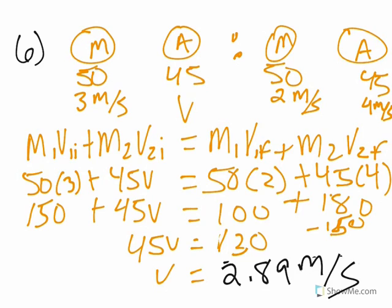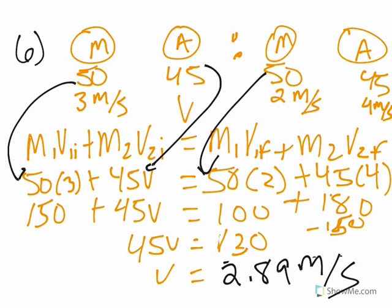To summarize: 50 times 3 gives 150, 45V is our unknown, 50 times 2 is 100, and 45 times 4 is 180. Solving for V: 45V equals 130, and 130 divided by 45 is 2.89 meters per second.